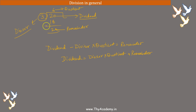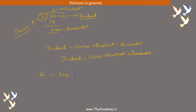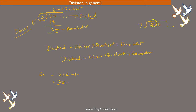Okay? So if we check this: dividend was 20, divisor was 3, quotient was 6, remainder was 2 — so 3×6 + 2 = 20. Right. This doesn't have to be single-step division. Let's say if we divide 200 by 7, how do we do it?